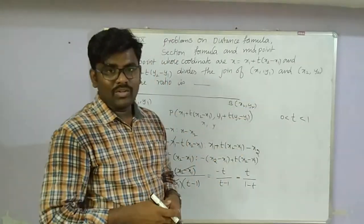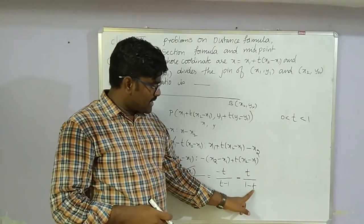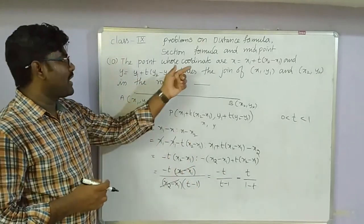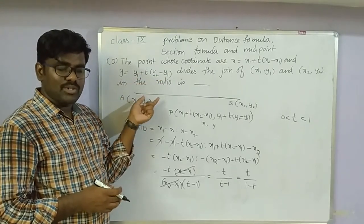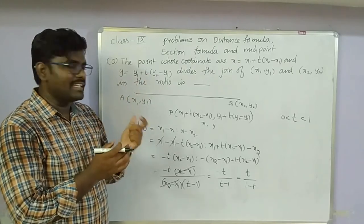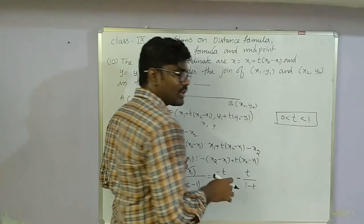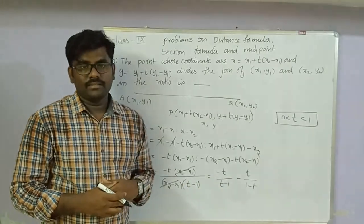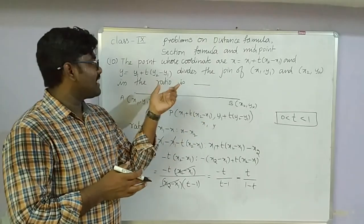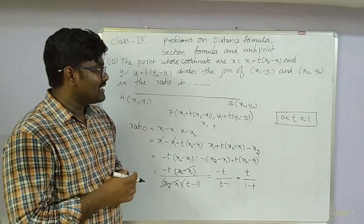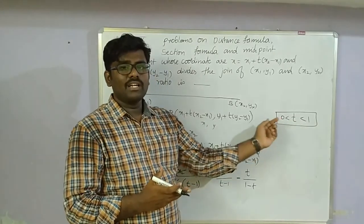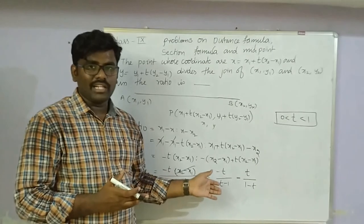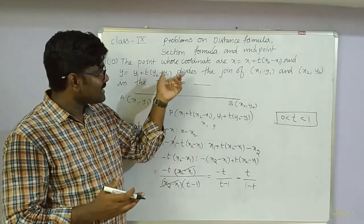If T > 1, say T=2, then 2/(1-2) = -2, which is negative — external division. So the condition for internal division is 0 < T < 1, and for external division T < 0 or T > 1. The ratio is T:(1-T) or equivalently -T:(T-1).